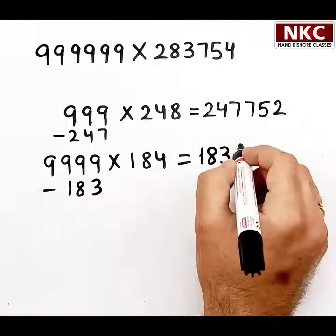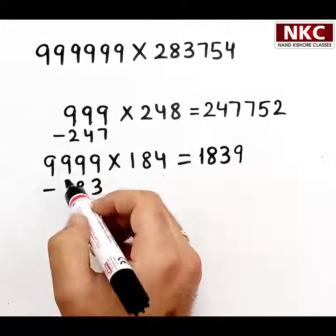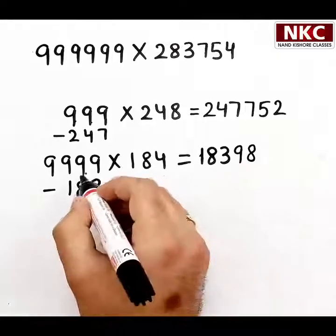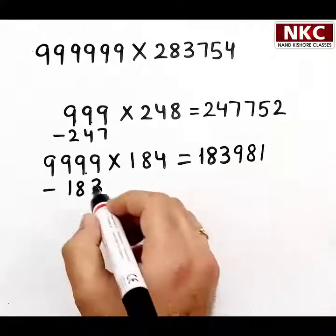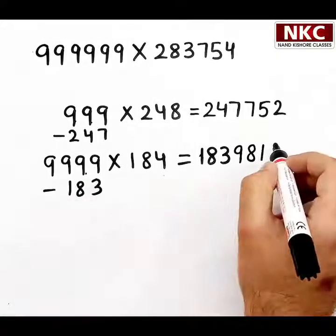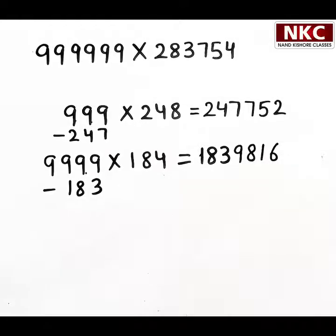This first 9 will remain as it is. 9 minus 1 is 8. 9 minus 8 is 1. 9 minus 3 is 6. See how easy it is.